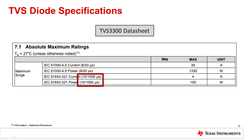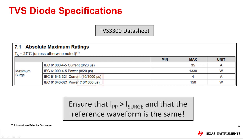When designing, make sure that the diode IPP is higher than the surge current that must be withstood per the IEC 61000-4-5 tests, and that the surge current is referenced to the same waveform you are testing with.